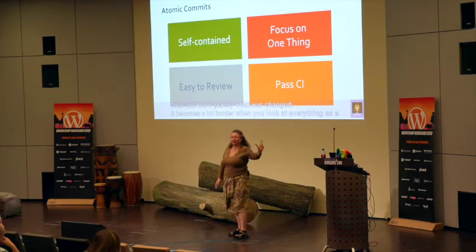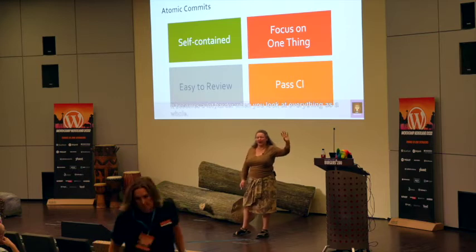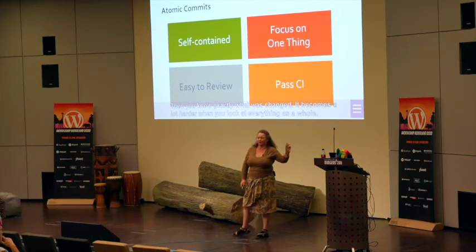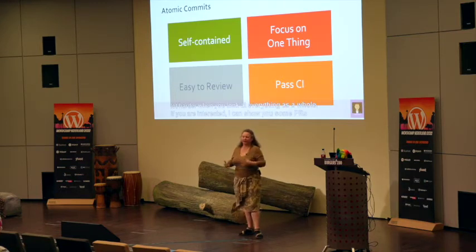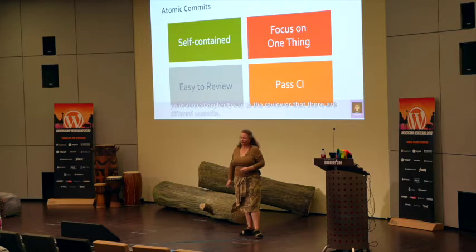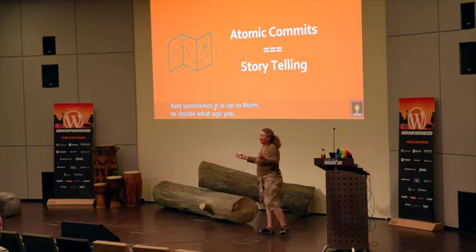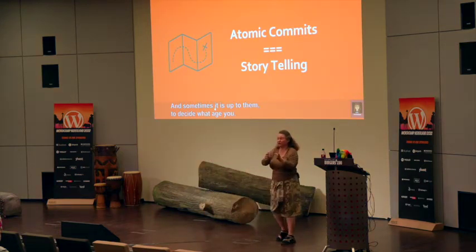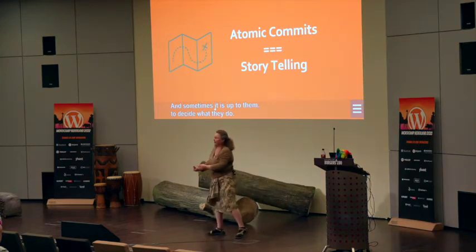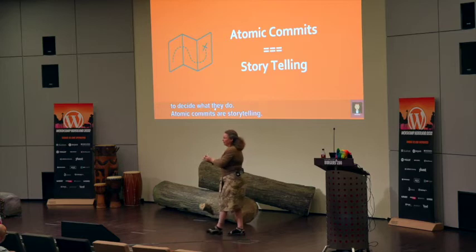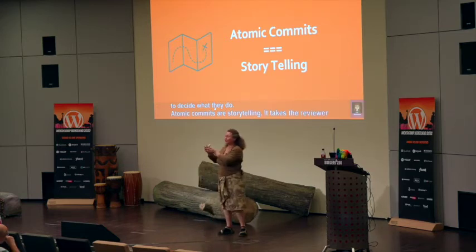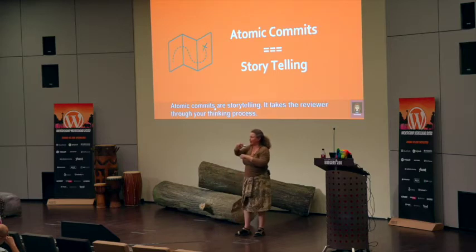If you're interested, I can show you some PRs where I explicitly say to the reviewers: review per commit, because I know that's going to help them. It also helps to see the thought process of the developer. So, atomic commits are storytelling — you take the reviewer through your thinking process step by step. They are individual self-contained changes. And if one of those steps is wrong, you can just pull out that step, and all the other steps can still stay in place.